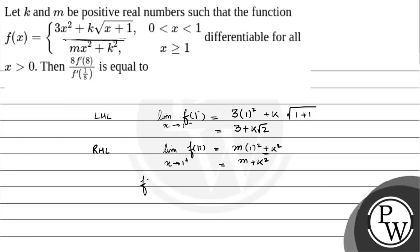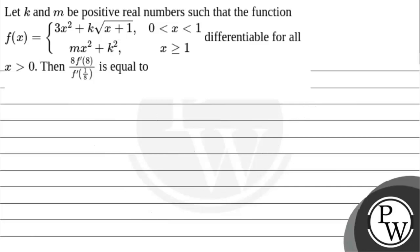So from continuity, limit x tends to 1⁻ of f(x) equals limit x tends to 1⁺ of f(x). Therefore, 3 + k√2 = m + k². Let's say this is equation number 1.